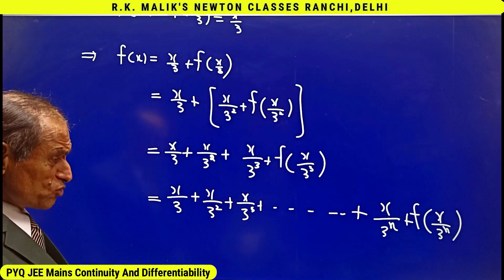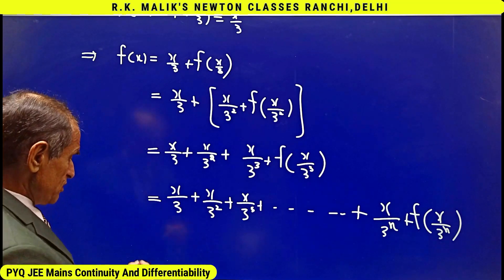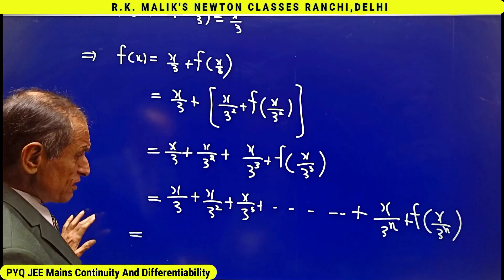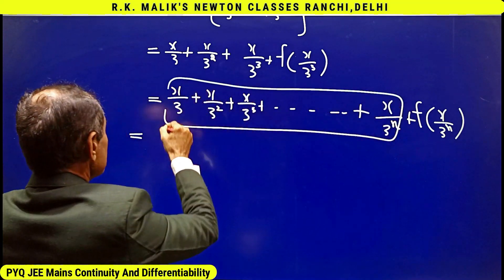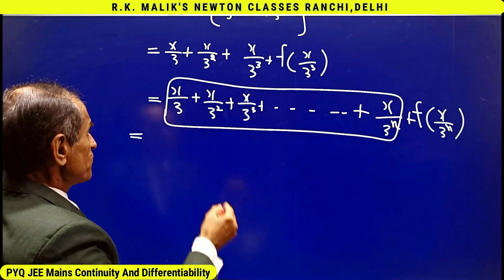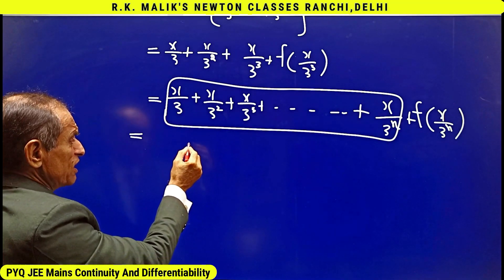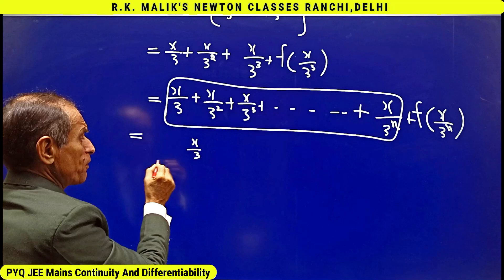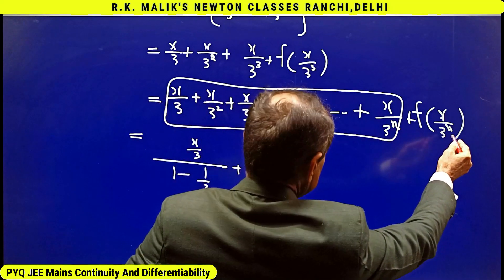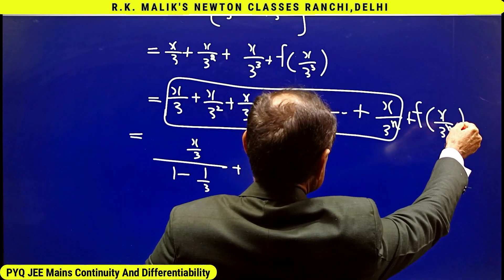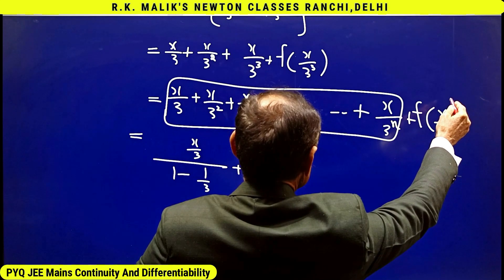limit as n tends to infinity because I can take this step infinite number of times. I will be getting—this part will become an infinite GP with first term x/3 and common ratio 1/3, hence I get x/3 divided by (1 - 1/3).